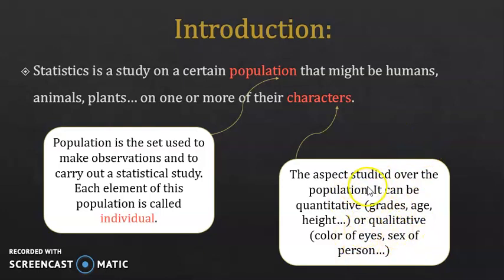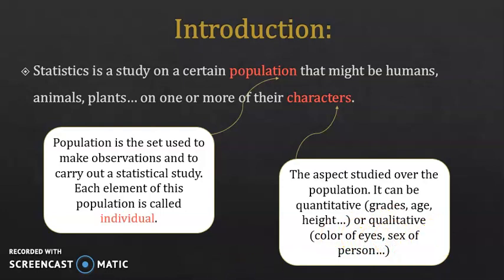These characters can be either quantitative or qualitative. They are called quantitative if you can measure them by numbers — like grades, age, height, or weight, for example. And they are called qualitative characters if they can't be measured by numbers, like color of eyes or sex of a person.